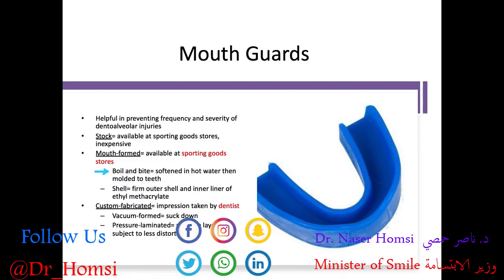You can also get a shell mouth guard with a firm outer shell and a softer inner liner of ethyl methacrylate. And lastly, the best option is something custom fit to your child's mouth — an impression is taken by a dental professional, a cast or model is made, and a mouth guard is vacuum-formed or pressure-laminated with multiple layers. Something custom fit will fit best, but if you want one step down, the mouth-formed guard is a better option than the stock mouth guard.